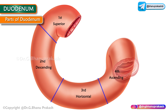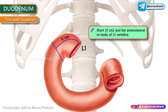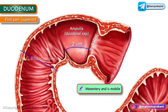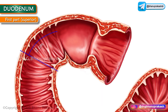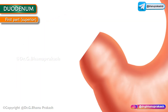The first part of the duodenum, or the superior part, is short — approximately five centimeters in length — and lies anterolateral to the body of the L1 vertebra. The first two centimeters immediately distal to the pylorus is known as the ampulla, also called the duodenal cap; it has a mesentery and is mobile. The distal three centimeters have no mesentery and are immobile.